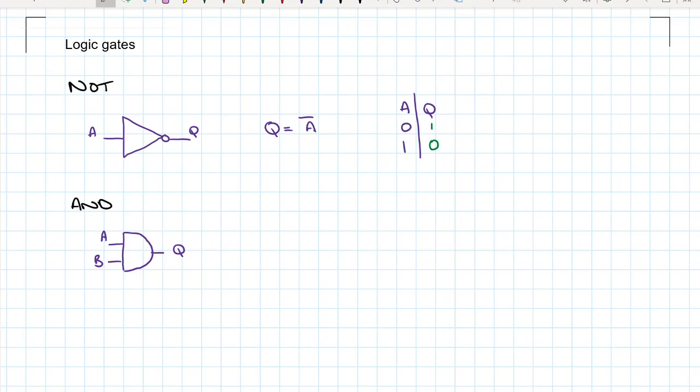So our AND gate comes next, just looks like a big D. Okay, and for this one we need A and B for it to get high on the output. And it's the dot there that means the AND.